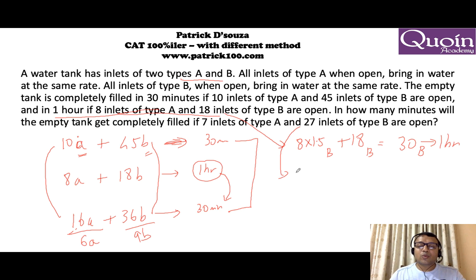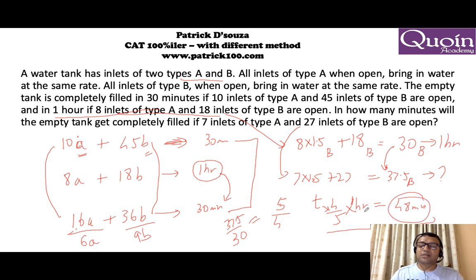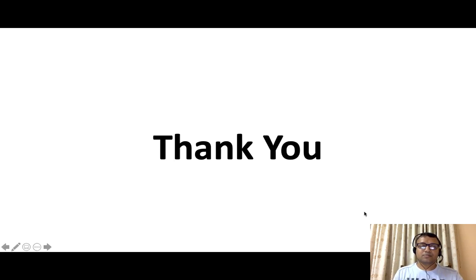Now, coming here, 7 into 1.5 plus 27 will give you 37.5 inlet pipes of B will take you how much time? If you look at the ratio of the pipe is 4 is to 5 or 5 is to 4. The time taken will be 4 fifth. 4 fifth of 1 hour which is 48 minutes. Because the number of pipes are increasing in a ratio of 5 is to 4. 37.5 upon 30 is 5 upon 4. So, the time taken will be inversely proportional. 4 upon 5 of 1 hour which is 48 minutes as the answer. Thank you.